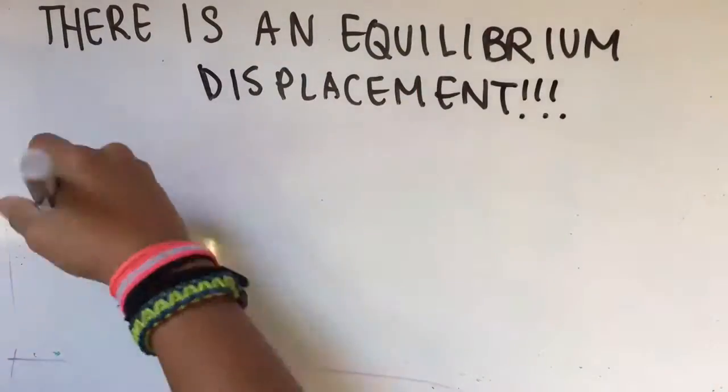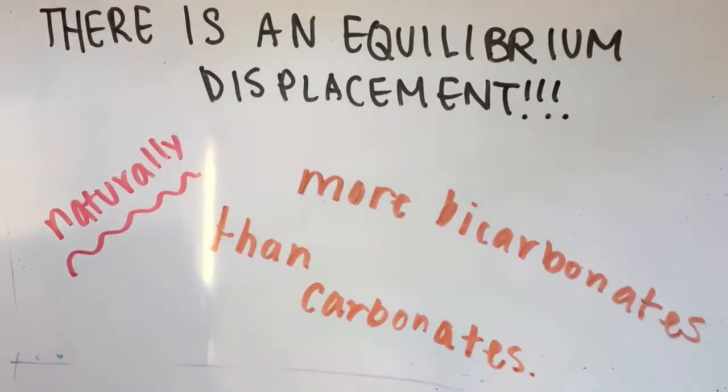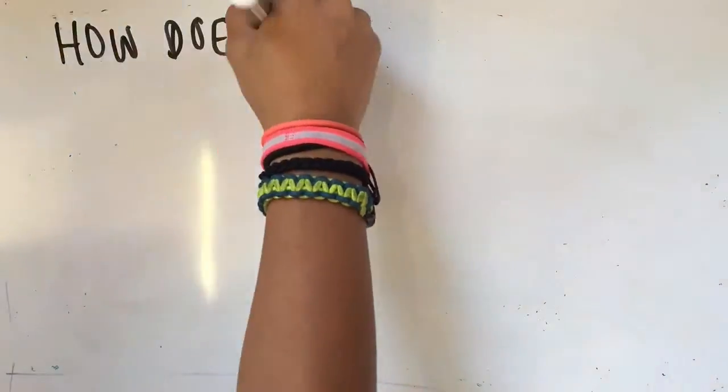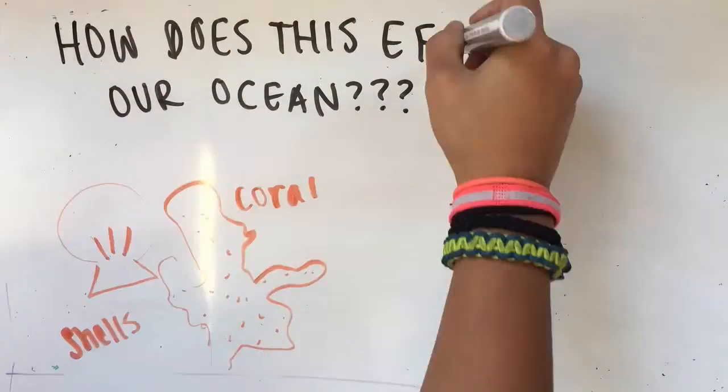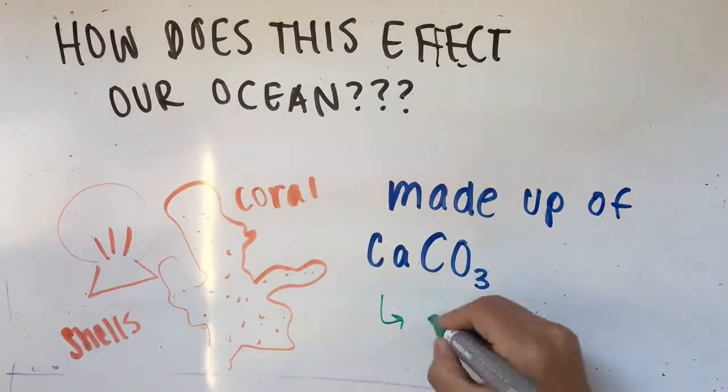This results in an equilibrium displacement because there are more bicarbonates than carbonates. Because of the smaller amount of carbonates, extra carbonate is being removed from the shells and coral, which are made up of calcium carbonate.